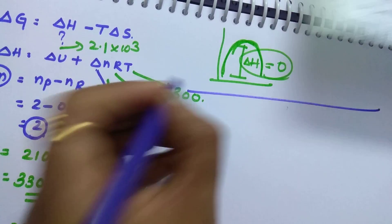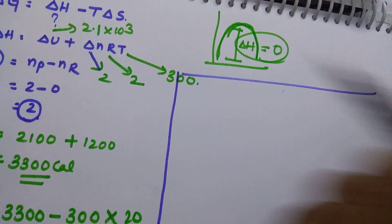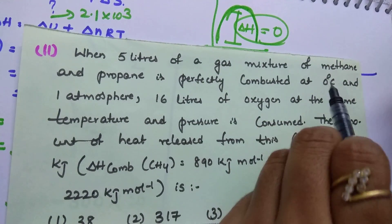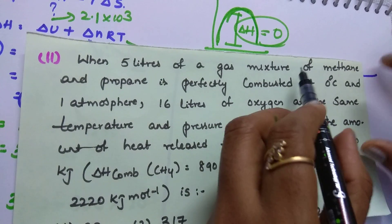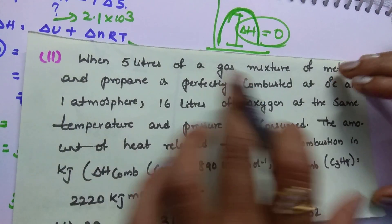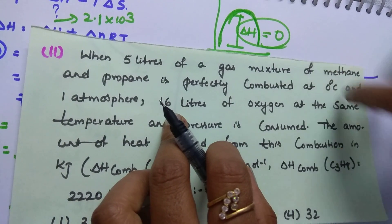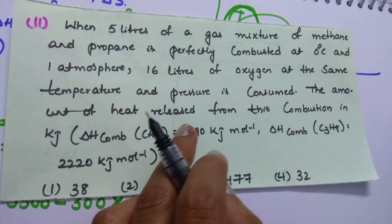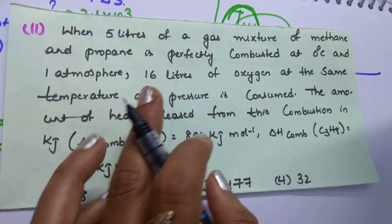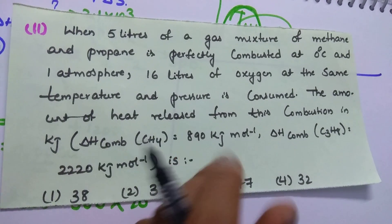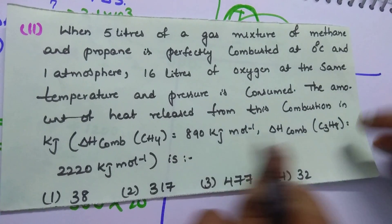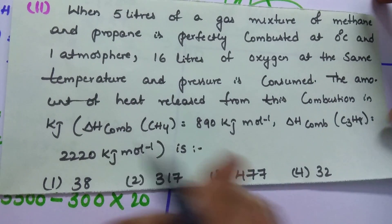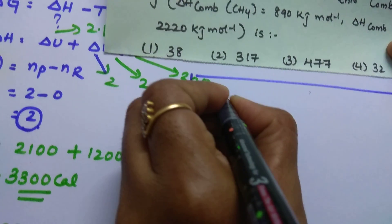This is a slightly bigger question, but I will teach you in an easy way. Five liters of a gas mixture of methane and propane is perfectly combusted at a particular temperature and pressure, and this requires 16 liters of oxygen at the same temperature and pressure. One mole of methane releases 890 kilojoules and one mole of propane releases 2220 kilojoules. How much total energy is released during combustion?